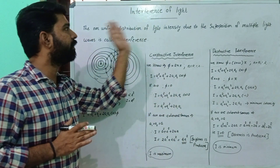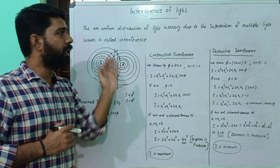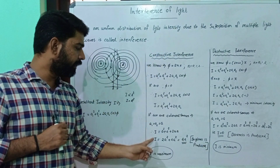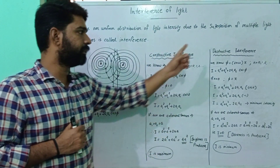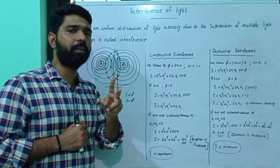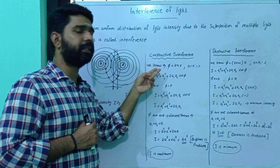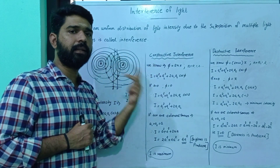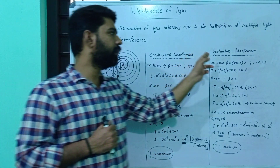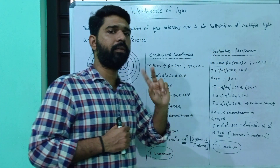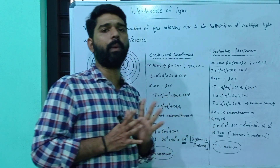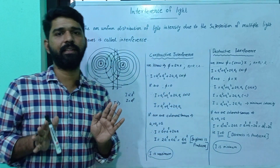So this is the interference of light. In constructive interference, the intensity is maximum (4A² for coherent sources). In destructive interference, the intensity is minima — equal to zero for coherent sources. It's clear.